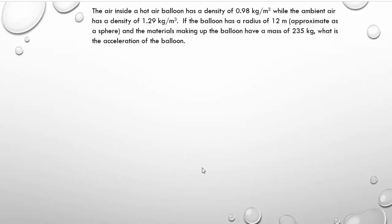Last problem. This will help quite a bit when we actually launch our hot air balloons, so take some notes — this will come in handy, and it has several steps. The air inside a hot air balloon has a density of 0.98 kg/m³. The ambient air has a density of 1.29 kg/m³ — when you heat it up, the air spreads out and gets less dense. The balloon has a radius of 12 meters, so this is an actual full-size hot air balloon.